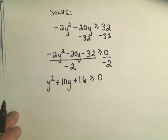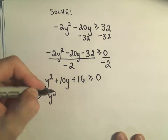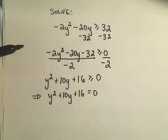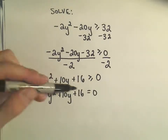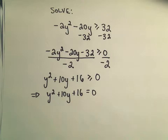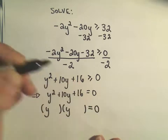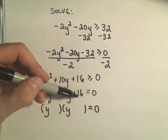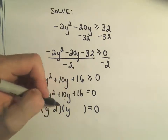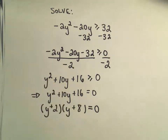Once I have one side equal to zero, I now just solve the corresponding equation: y squared plus 10y plus 16 equals zero. The first thing I think is, does this factor nicely? I'm thinking two numbers that multiply to 16 but add up to 10. 1 and 16 wouldn't work. But 2 and 8 multiply to 16, and 2 and 8 also add up to positive 10. So I think we can use a positive 2 and a positive 8.